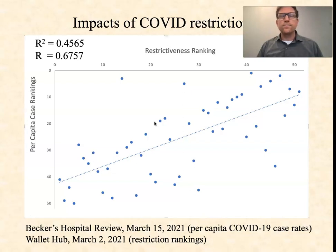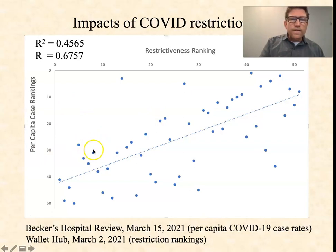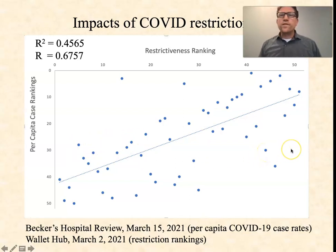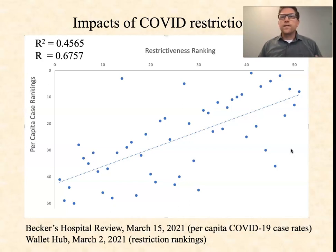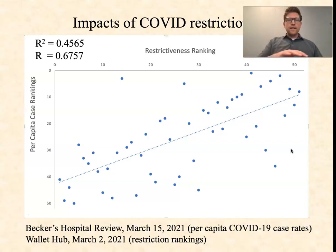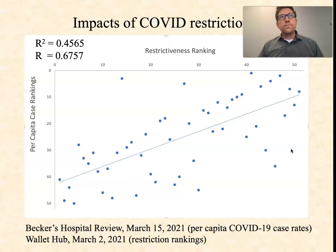I've heard people say: what about Florida versus California? California was so restrictive and still has problems. California is pretty close to the trend line on the graph. Florida, on the other hand, is an outlier — they have a very low total case rate, and restrictiveness apparently didn't factor into their good fortune. But comparing California to Florida alone doesn't dismiss all the rest of the data. Don't jump to conclusions based on select data points. Try to get hold of as much data as you can — and when we do that nationwide, it does appear that COVID restrictions are having a positive impact and saving a lot of lives.